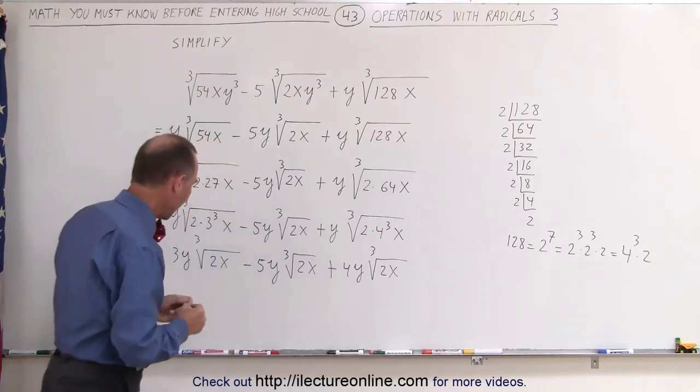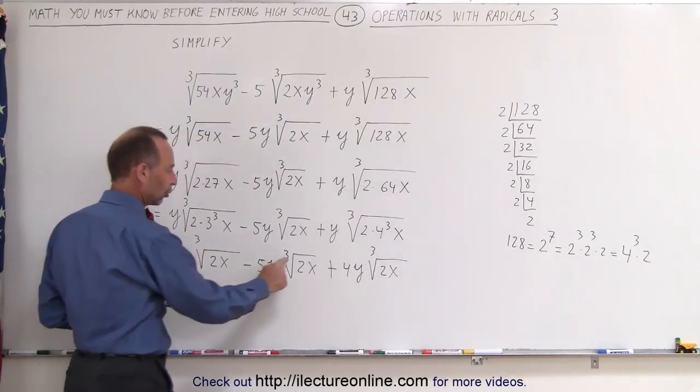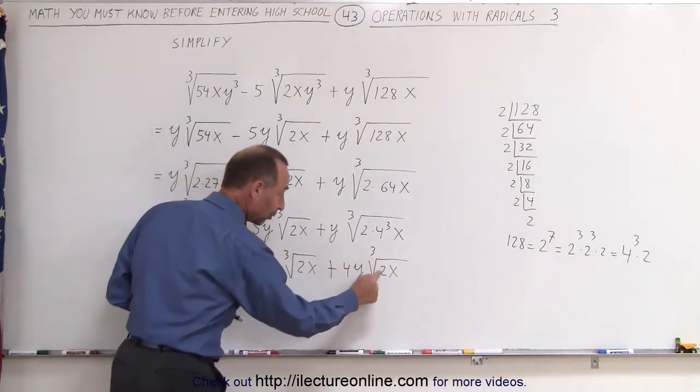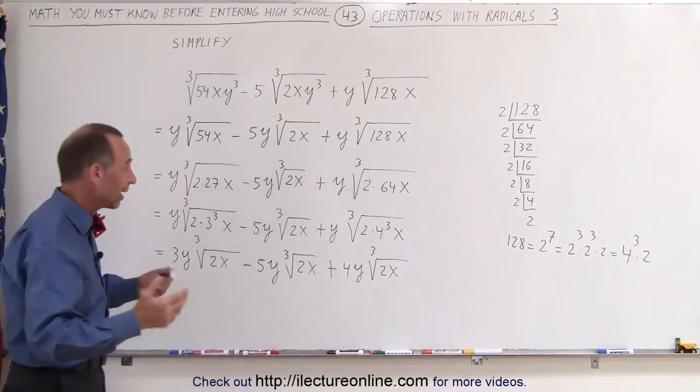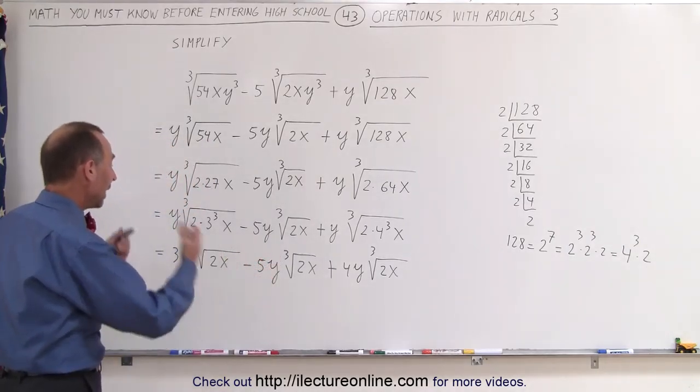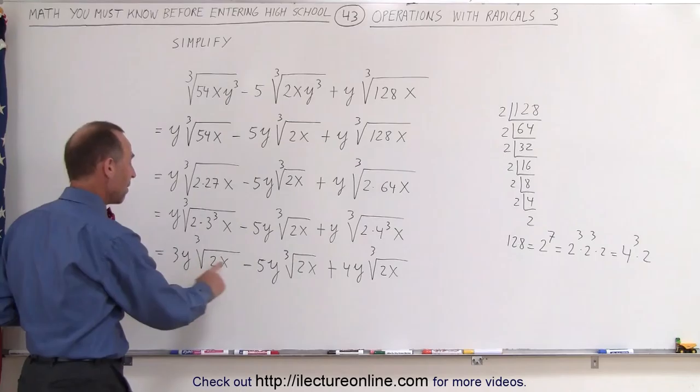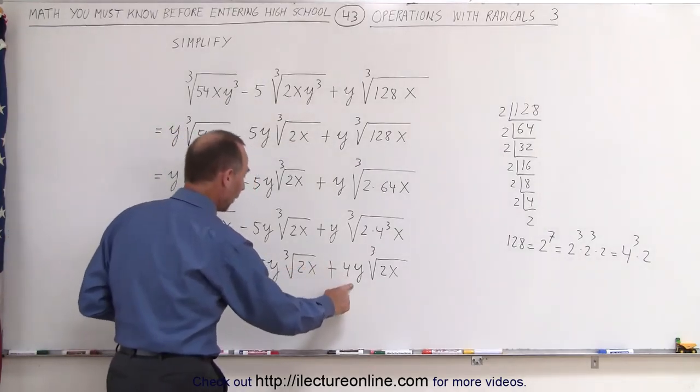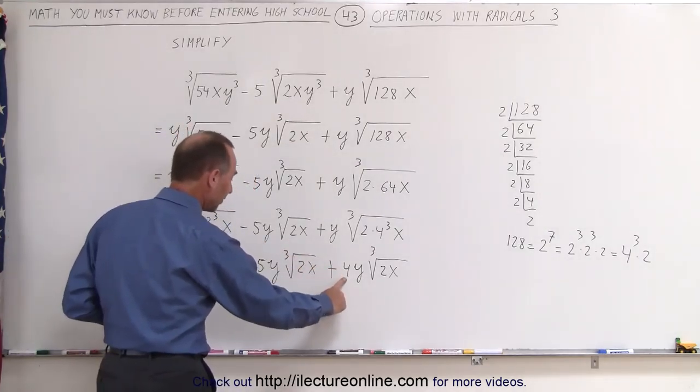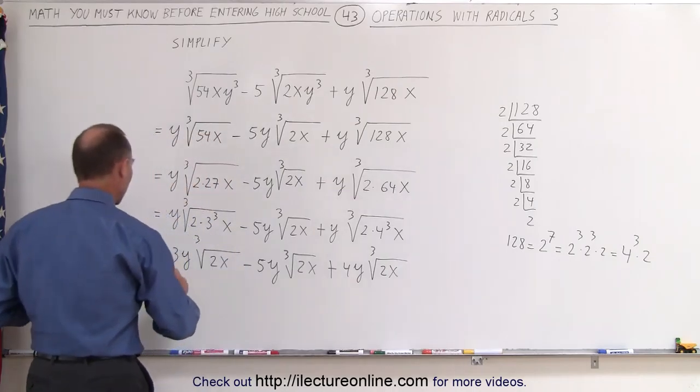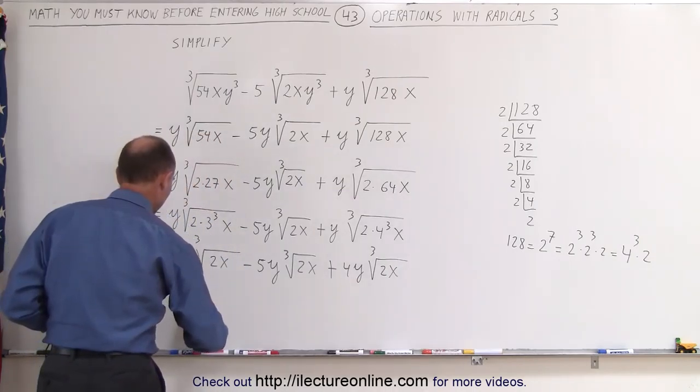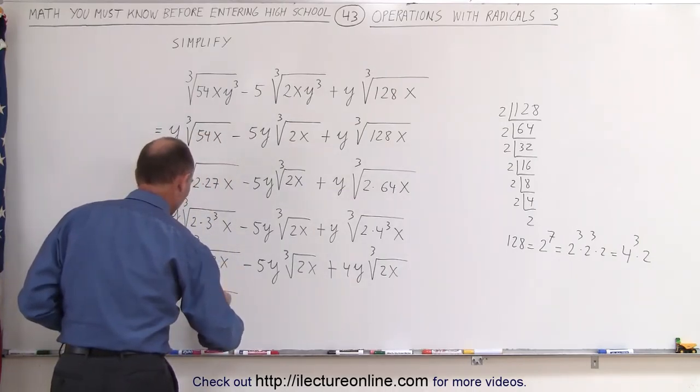Now notice we have the cube root of 2x, the cube root of 2x, and the cube root of 2x which means we have the same radical and we can combine those. We have 3y minus 5y plus 4y. 3 plus 4 is 7 minus 5 is 2 and so we get 2y times the cube root of 2x